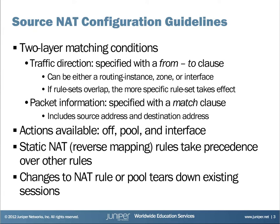Within rule sets we have rules, which are configured in the order they are created. We can define match conditions such as source address and destination address. With source NAT, there are three different types of actions defined in the 'then' part of the rule: 'off' meaning don't translate; 'pool' meaning translate to an address in the configured pool; and 'interface-based' meaning translate to the outgoing egress interface's public address.